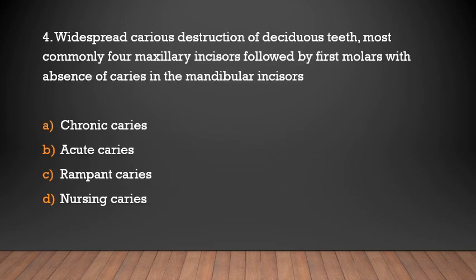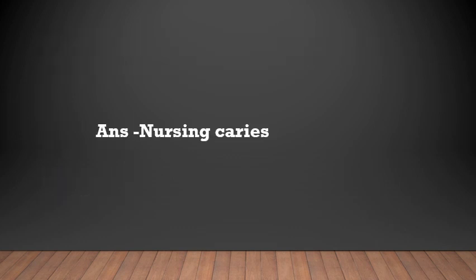Widespread caries destruction of deciduous teeth, most commonly affecting maxillary incisors followed by first molars, with absence of caries in the mandibular incisors — this describes: chronic caries, acute caries, rampant caries, or nursing caries? Answer: Nursing caries.